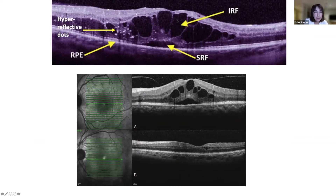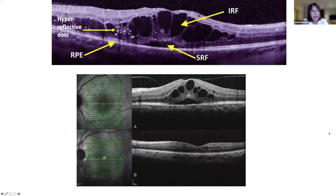Here we see cysts of intraretinal fluid, and the tiny pinpoint dots — known as hyperreflective dots — in the central part of the retina, thought to represent Müller cell activity. Subretinal fluid is also visible. This is a prime example of an OCT where we would consider steroid treatment over anti-VEGF. The example below shows a patient treated with steroid — after one injection the retina becomes almost flat and the edema resolves.